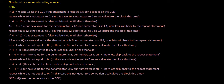Repeat while 12 is not equal to zero. In this case, 12 is not equal to zero, so we calculate the block this time. If 4 is more than 12, this statement is false. So let's skip until after otherwise. 12 minus 4 equals 8. Our new value for the denominator is 8. Our numerator is still 4.